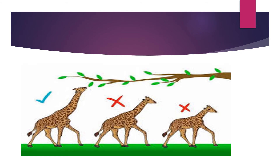Here you can see the neck of the giraffe. The one which is best adapted survives and the other one dies. This is an example of the natural selection theory by Charles Darwin.